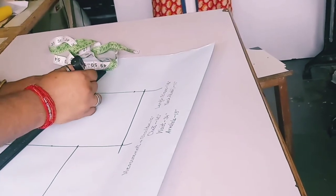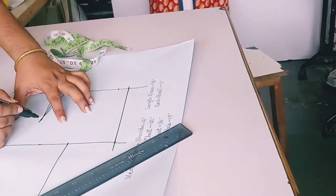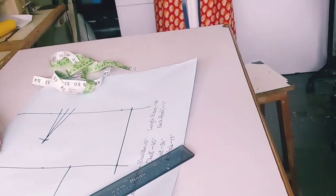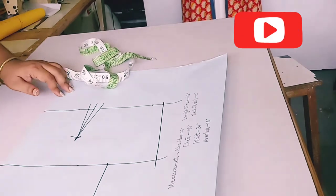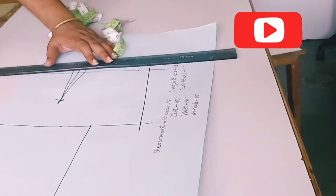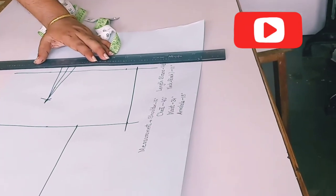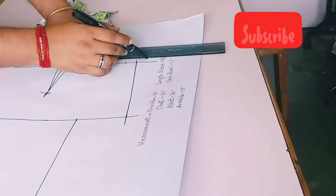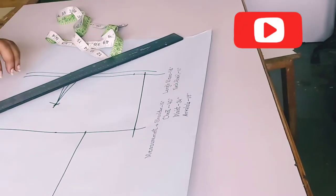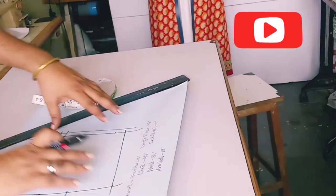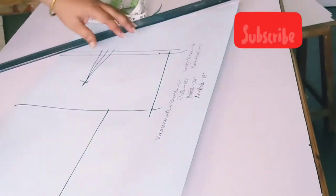Automatically your waist area will come. Your dart is ready. This is your base line. You have to draw it one centimeter for cutting inside.